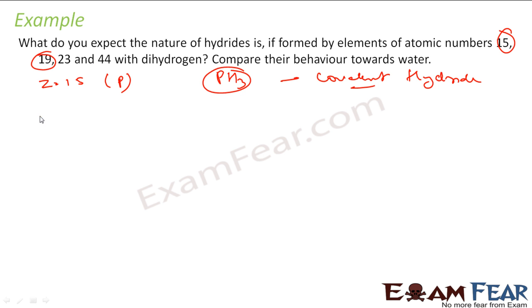The next is 19. Z equals 19, we have potassium. Potassium forms K+H-, that is ionic hydride.